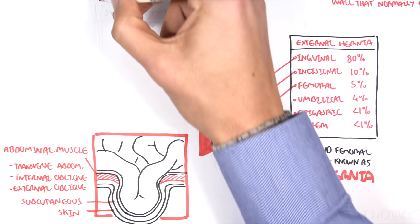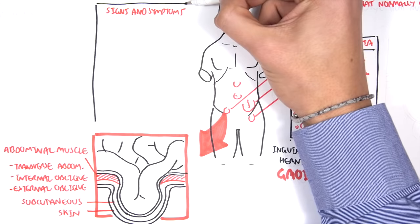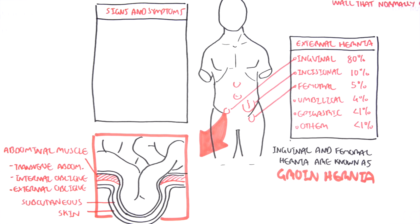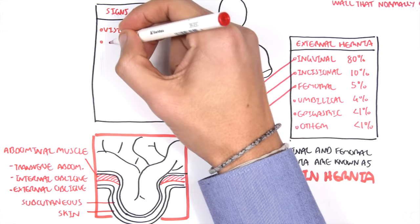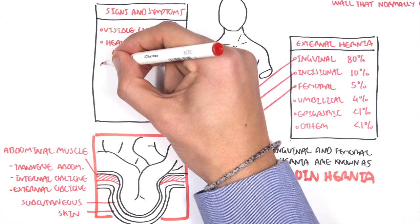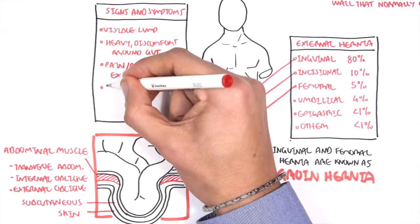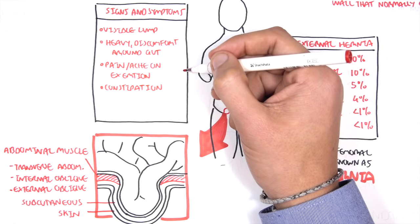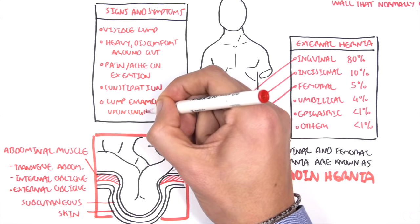The signs and symptoms of someone with an inguinal hernia depend on the severity, how much it's bulging out, and whether it's strangulated. Overall, the signs and symptoms include a visible lump, heavy discomfort around the gut, pain and aching on exertion such as lifting something, constipation, and the lump enlarges upon coughing.